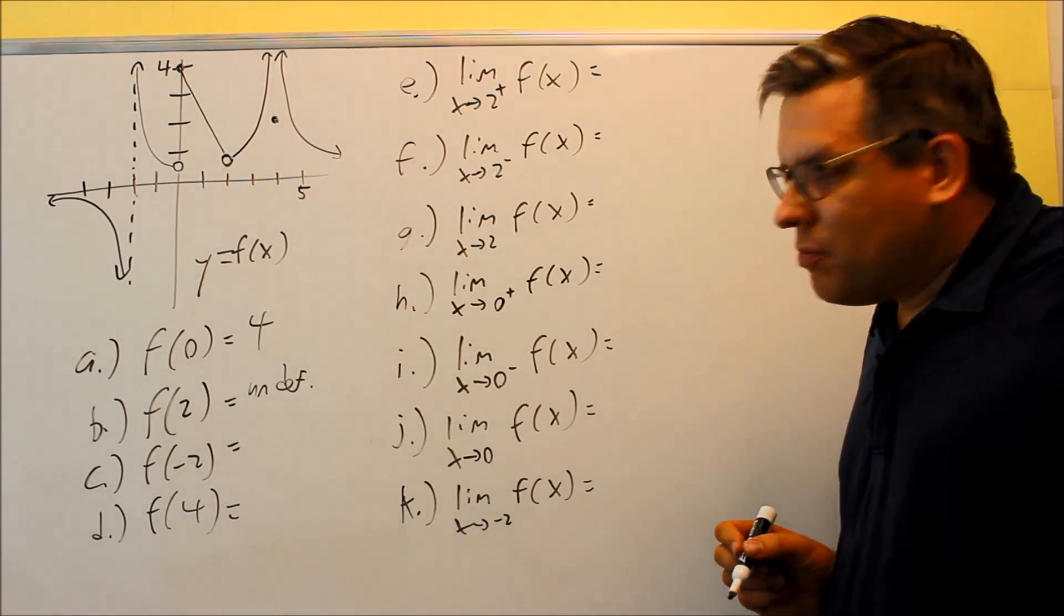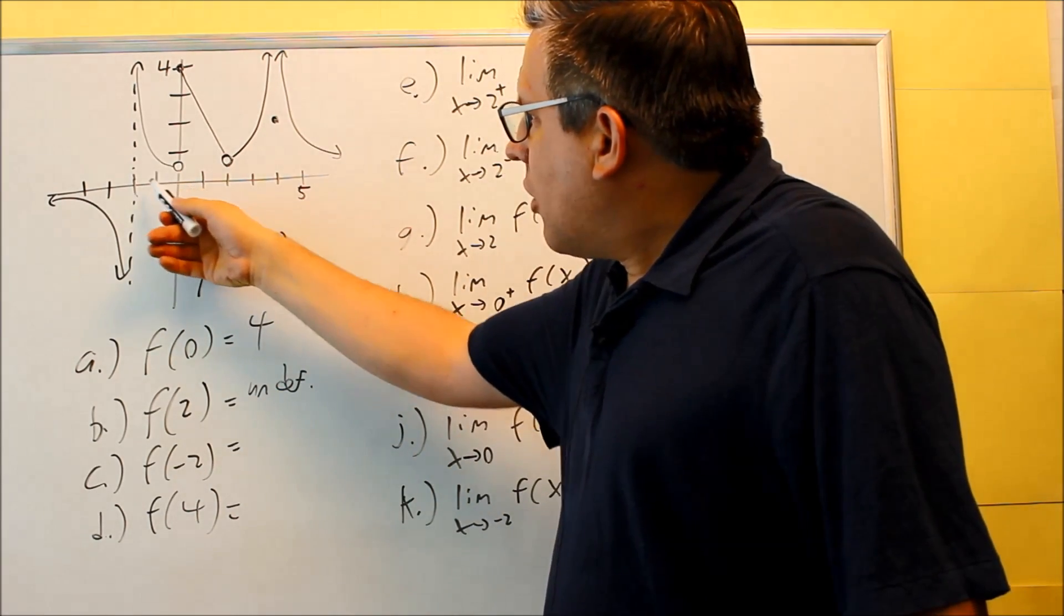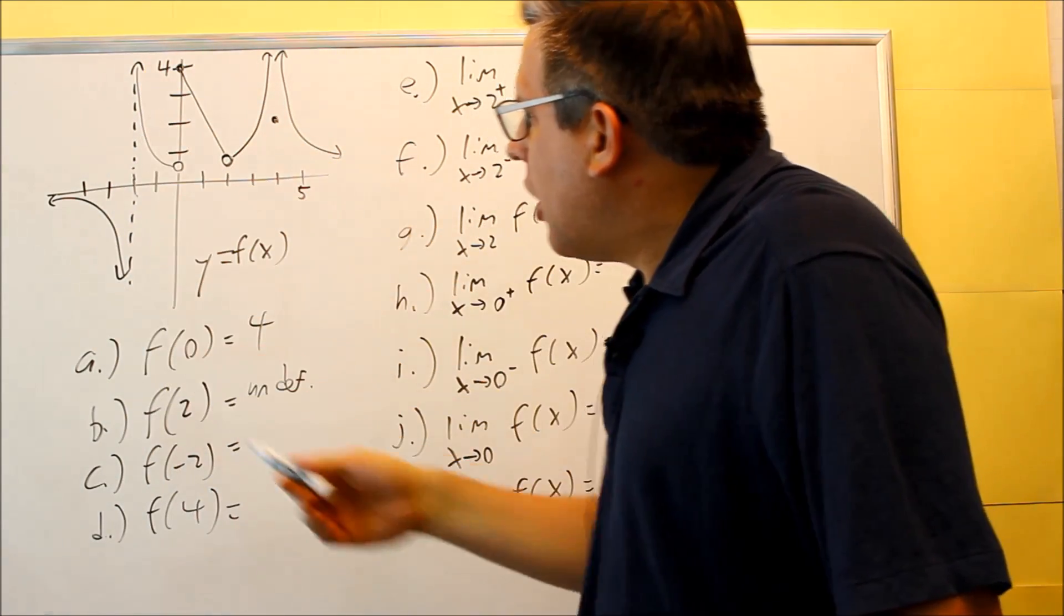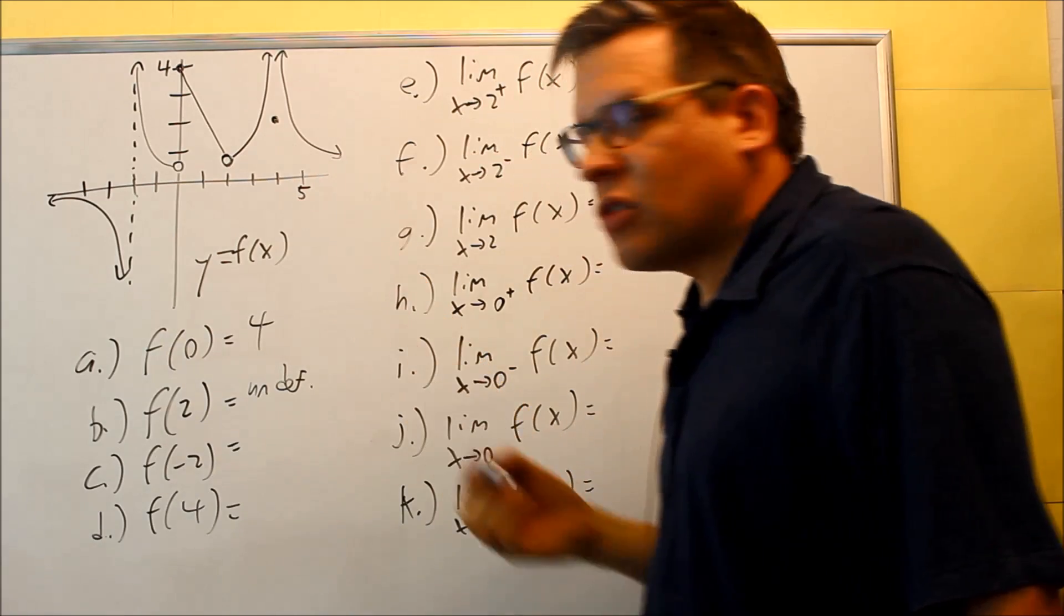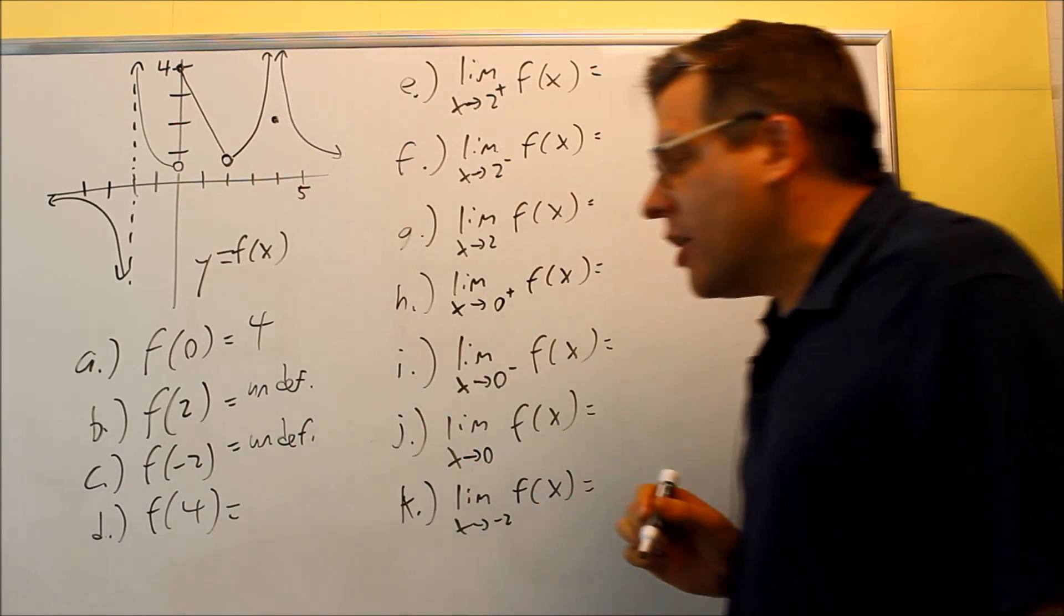f(-2) - we want the y value when x is negative two. At negative two we have an asymptote that's here. Because of that, we don't have any closed circles along there. Another one that's going to be undefined.